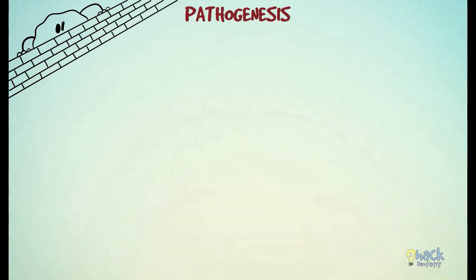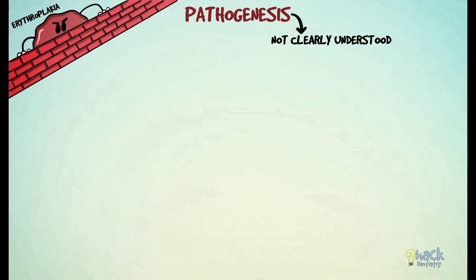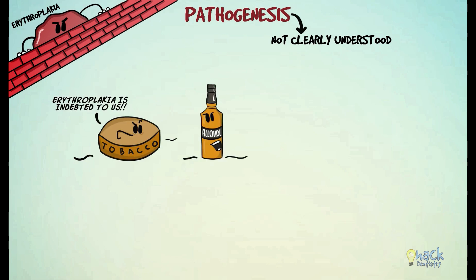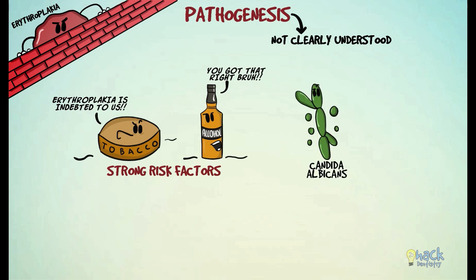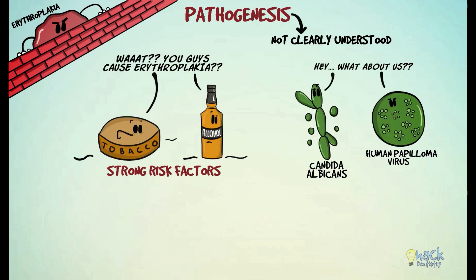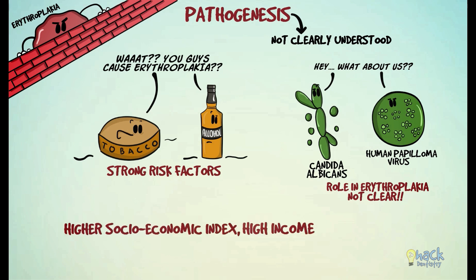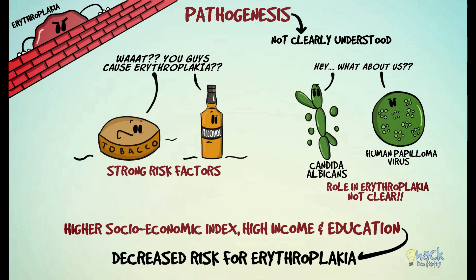The pathogenesis of Erythroplakia is not fully understood, and tobacco chewing and alcohol drinking have been implicated as strong risk factors for its development. Candida albicans and human papillomavirus have been demonstrated in patients with Erythroplakia, though their role in relation to this lesion is still not very clear. There have also been reports where higher socioeconomic index, high income, and education have shown to be associated with a decreased risk for Erythroplakia and other oral pre-malignancies.